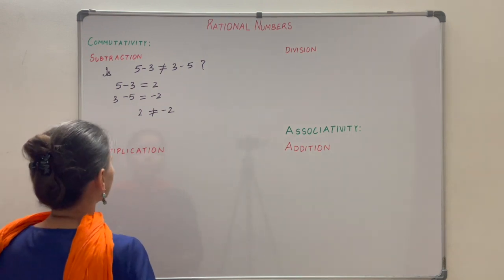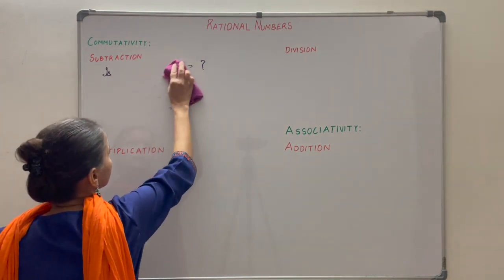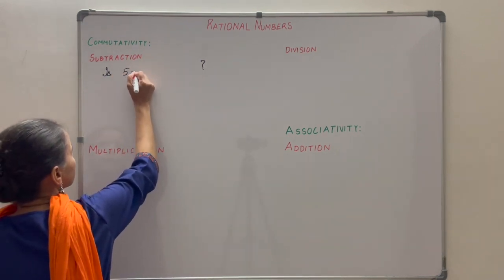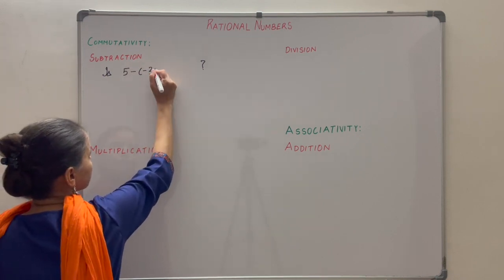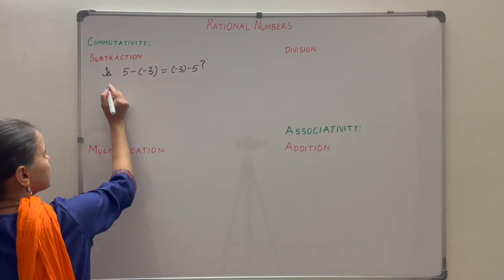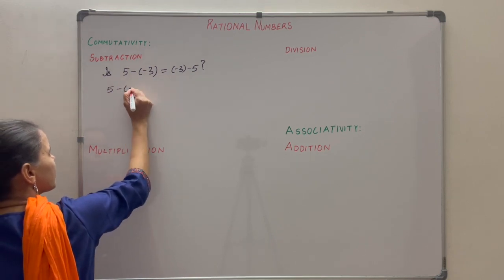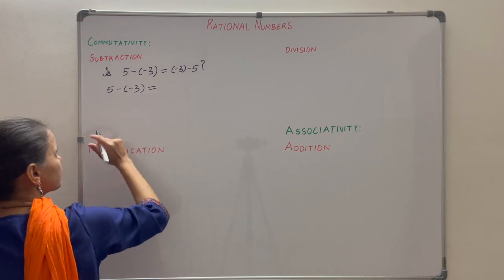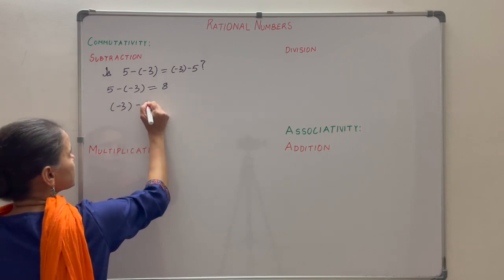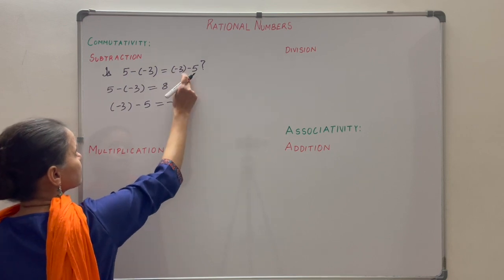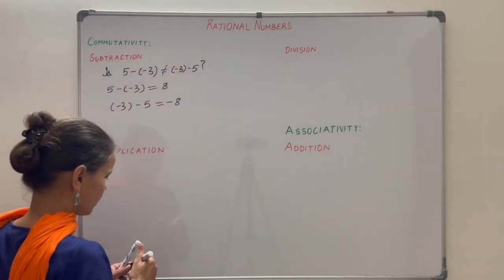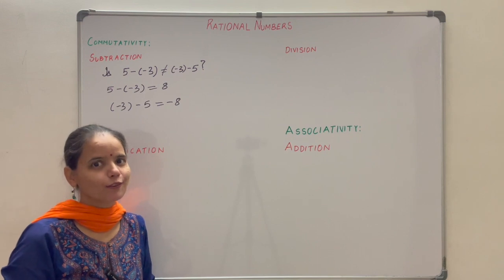Similarly, for integers subtraction is not commutative. Let us take two integers, say 5 and minus 3. Is 5 minus (minus 3) equal to minus 3 minus 5? Solving the left side: minus into minus becomes plus, so 5 plus 3 gives 8. On the right side: minus 3 minus 5 gives minus 8. So minus 8 is not equal to 8, confirming that subtraction is not commutative for integers.